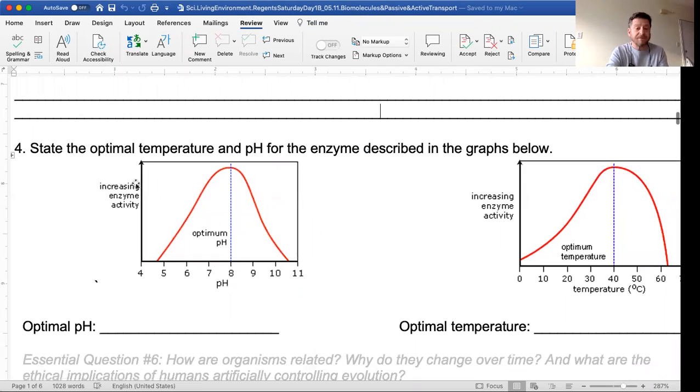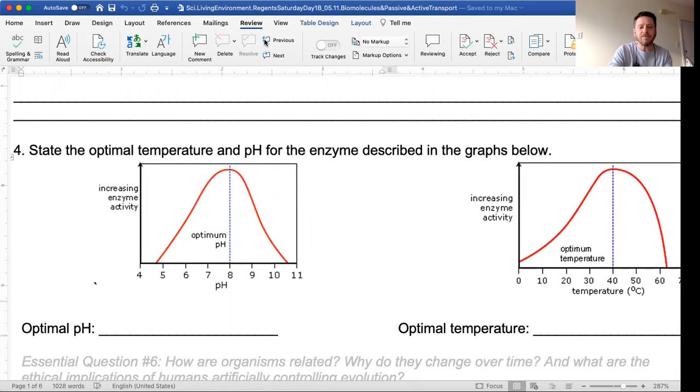State the optimal temperature and pH for the enzyme described in the graphs below. This is a graph with enzyme activity on the y-axis and pH on the x-axis. Temperature is on the x-axis, enzyme activity on the y-axis. We have a graph of the enzyme activity changing based on the pH. When is that the highest? I think you guessed it: eight. When is the temperature optimal for maximum enzyme activity? We find the top of the graph, go down, it is 40. You will probably have a question like this on the exam. Be sure you're able to identify the y and x-axis to determine optimal temperature and pH.